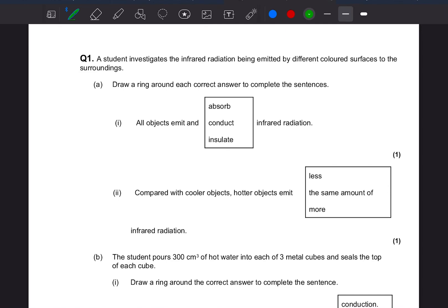Okay, this is question one of the higher paper two physics predicted paper. A student investigates the infrared radiation being emitted by different colored surfaces to the surroundings. Draw around the correct answer to complete the sentences. So all objects emit and absorb infrared radiation. Compared with cooler objects, hotter objects will emit more.